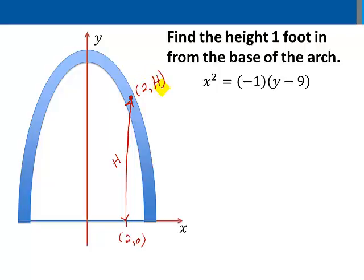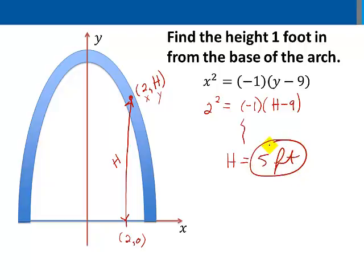Okay, so to solve for h, I'll plug 2 in for x, h in for y. We'll have 2² = -1(h - 9), and then solving for h gives us five feet. So our arch has a height of five feet one foot in from the base.